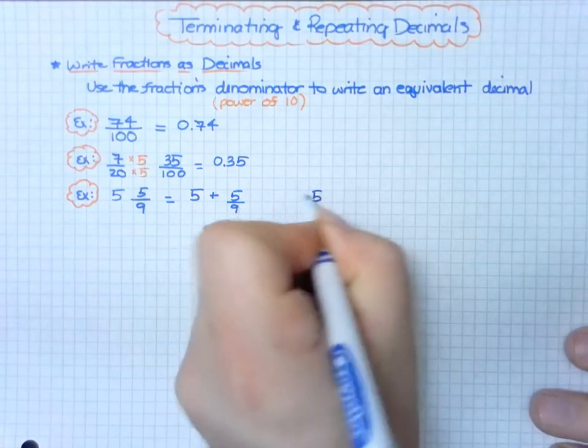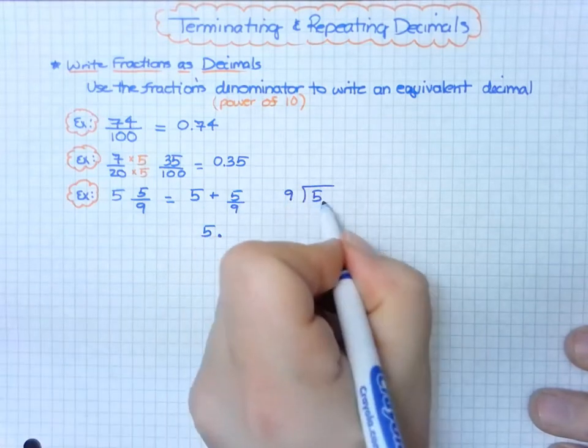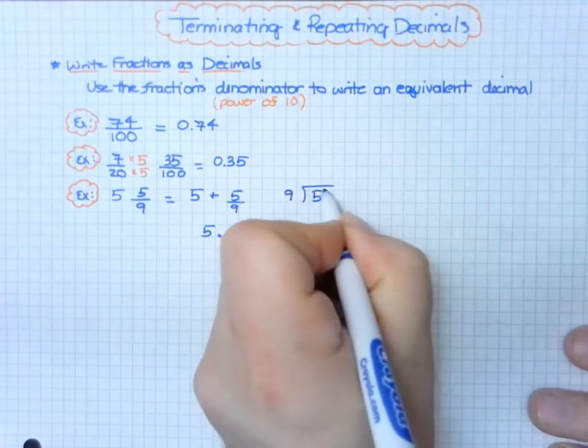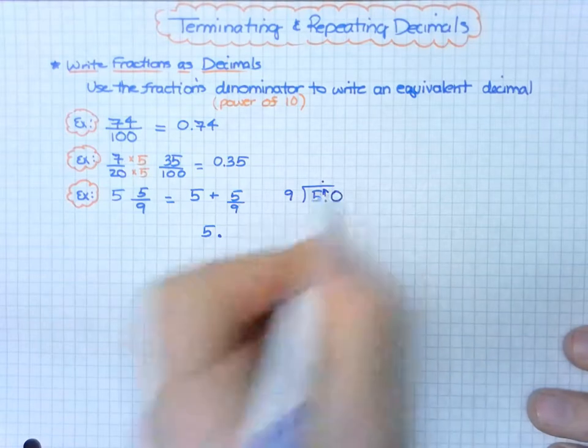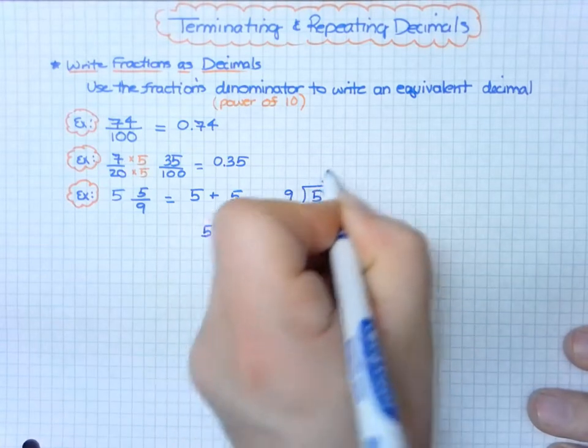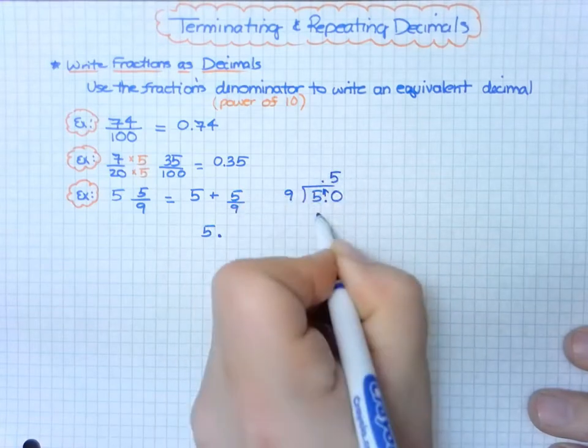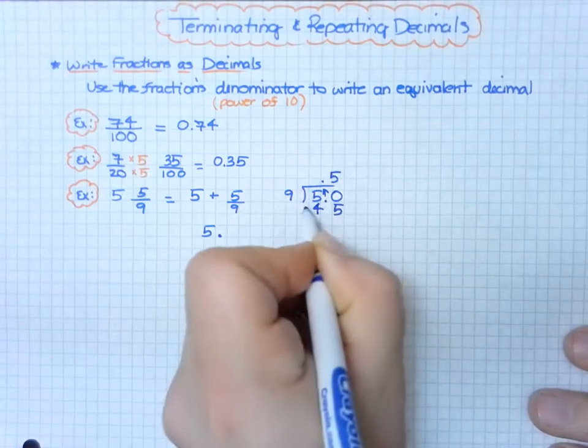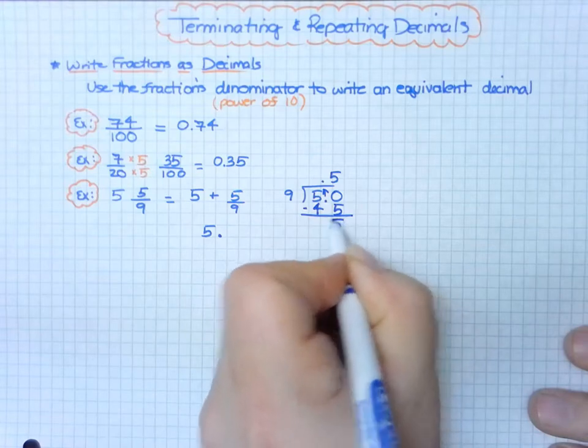5 divided by 9. Nine doesn't go into 5, so I include my decimal and add a zero—not a placeholder zero. Nine goes into 50 five times, giving me 45. I subtract and get 5. Whoa!